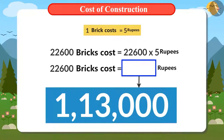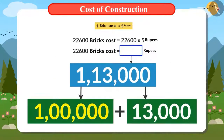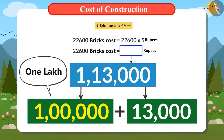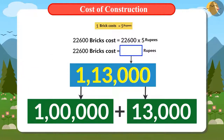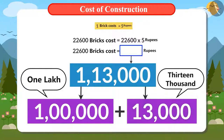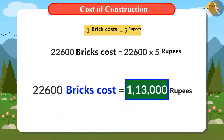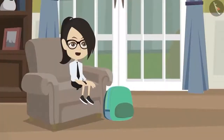Do you know how to read the answer? 100,000 is read as 1 lakh, so 113,000 is read as 1 lakh 13,000. This means the total cost of 22,600 bricks will be 1 lakh 13,000 rupees.